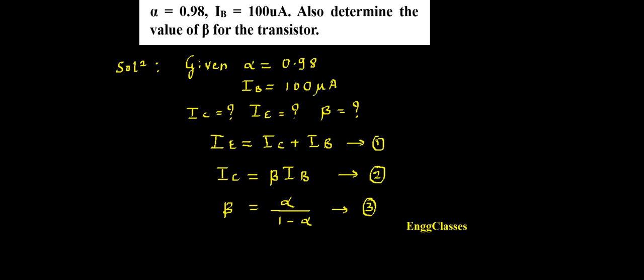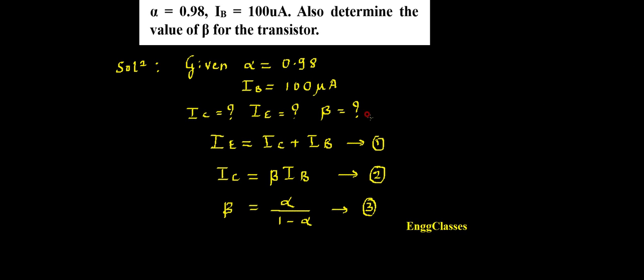Now if I look over here I have got alpha as 0.98. If I can put alpha as 0.98 in equation 3 I can find the value of beta. Once I find the value of beta I will put it in equation 2 and knowing the value of I_B I can find the value of I_C. Once I know I_C I will put it in equation 1 the value of I_C as well as I_B so that I can find the emitter current. So that is the way we will proceed further.